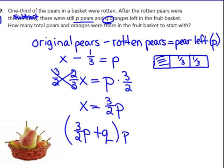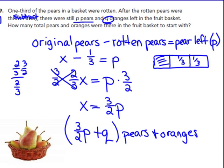Pears and oranges — if they took a third of them away, there are two-thirds left, which are called P. Multiplying by three-halves, the multiplicative inverse — remember, we don't divide by fractions; if you divided by a fraction you would keep, change, flip, which is just multiplying by the multiplicative inverse. So the original pears is three-halves P — one and a half times greater than the ones left — plus Q oranges, which was the original fruit in the basket. That's a tough one! When we get to class tomorrow, we're going to work on similar problems just like this.